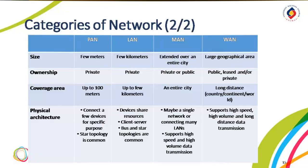The second one, we go to the Wide Area Network. A wide area network provides long-distance transmission of data, image, audio, and video information over a large geographic area that may comprise a country, a continent, or even the whole world. A WAN can be as complex as the backbone that connects the internet, or as simple as a dial-up line that connects a home computer to the internet.